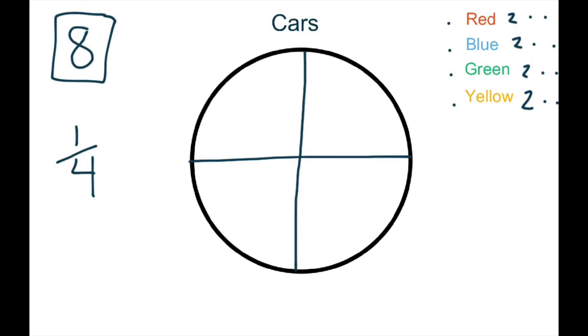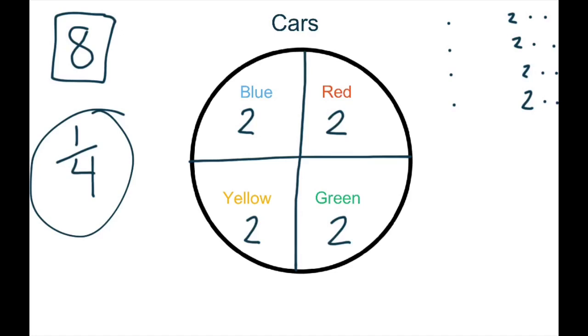Then, I can take and put each color in its own piece. Two blue cars, two red cars, two yellow cars, two green cars. So, what fraction are the blue cars? You got it, one-fourth. What fraction are the red cars? One-fourth. Yellow, one-fourth, and green, one-fourth.